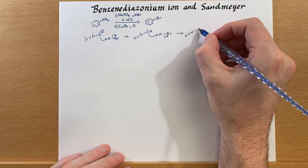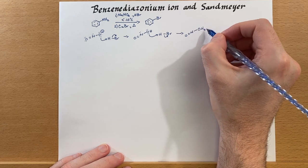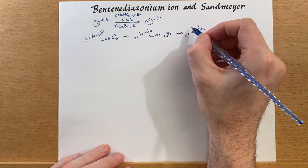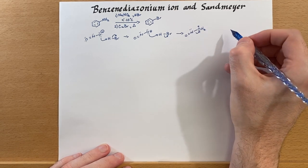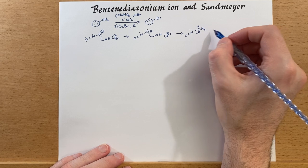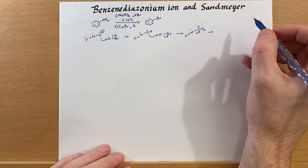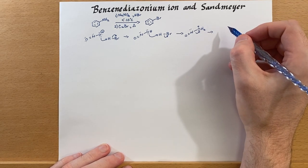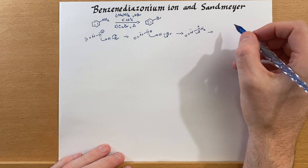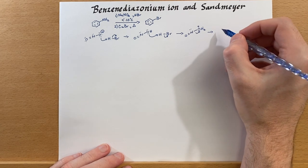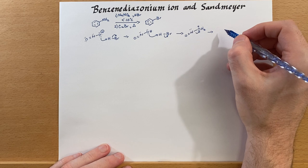So we're going to generate water, which is a good leaving group, and surprise, it's going to leave. When we do that, we're going to generate nitrosium ion, nitrosonium ion.